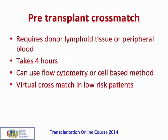The pre-transplant crossmatch requires donor lymphoid tissue or peripheral blood cells, takes approximately four hours, and can be done by flow cytometry or a cell-based method. In recent years there has been increasing use of virtual crossmatching, used in low-risk patients where screening has been done recently and there have been no recent sensitizing events such as blood transfusion or pregnancy. If no antibodies of significance were found at the last screening, the transplant proceeds and a flow or cellular crossmatch is performed retrospectively. This has reduced the time for patients to reach theatre and therefore reduced cold ischemia times.